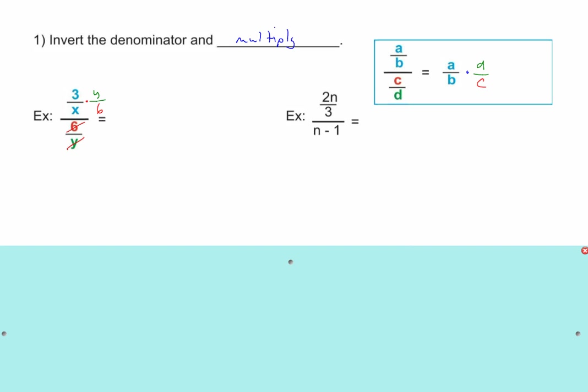We just did these a little bit ago. They usually weren't in this format — they were with the elementary-style division symbol. You would have had 3 over x, division symbol, 6 over y. But that's what it means. We can invert and multiply, and it looks like y over 2x — reduce the 3 and the 6. Algebra 1; we don't even need to show that at this point.